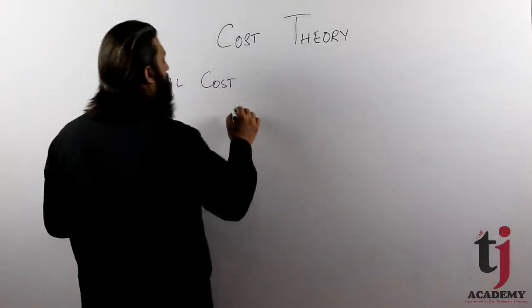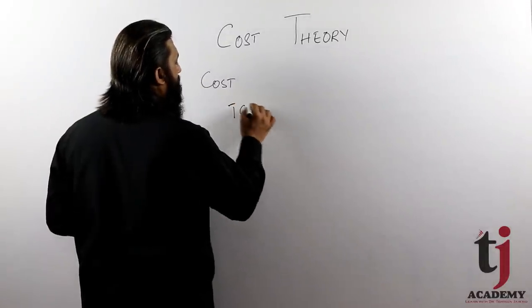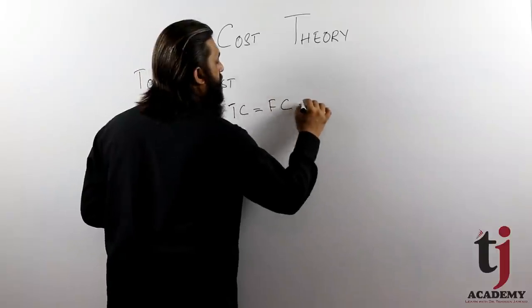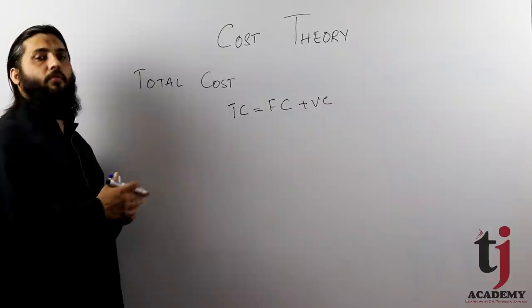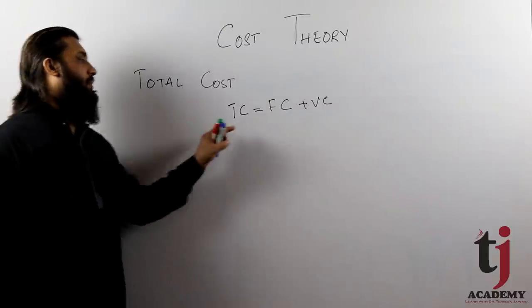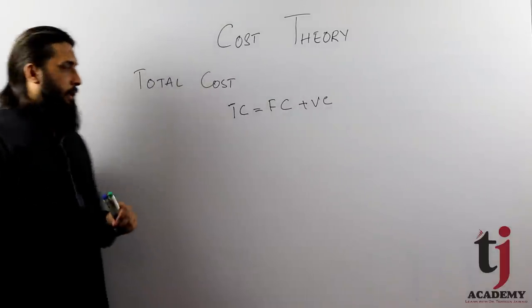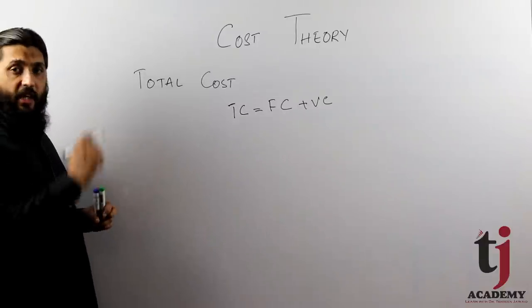Now let's see total cost. Total cost is nothing but the sum of fixed cost and variable cost. If you sum these two, you get total cost. Now let's see graphically how it is drawn.